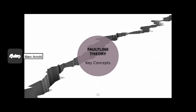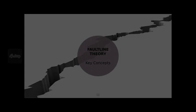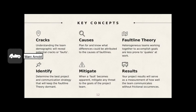Now that you've heard about the fault line theory, let's review key concepts. Cracks: understanding the team demographic will reveal potential cracks or faults. Causes: it is important to plan for and know the differences that could be attributed to the causes of fault lines. Fault Line Theory: heterogeneous teams working together to accomplish goals are less prone to conflicts at work. Identify: determine the best project and communication strategy that will keep the fault line theory dormant.